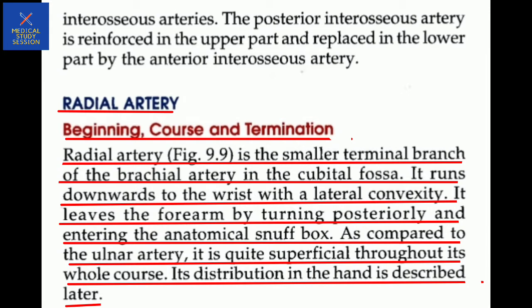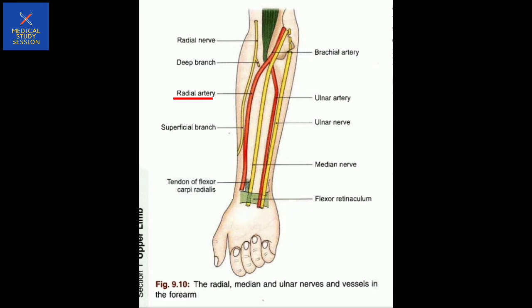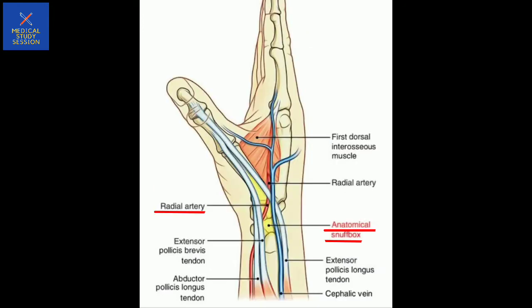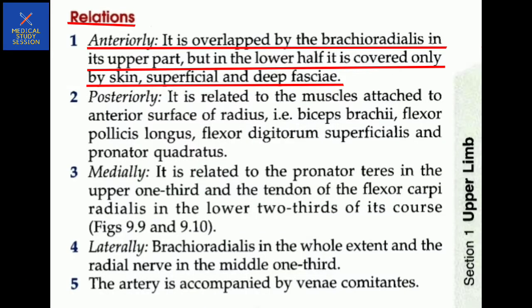Radial artery - beginning, course and termination. The radial artery is a small terminal branch of the brachial artery in the cubital fossa. It runs downward to the wrist with lateral convexity. It leaves the forearm by turning posterior and entering the anatomical snuff box. As compared to the other arteries, it is quite superficial throughout its course. Its distribution in the hand is described later. The radial artery is on the lateral side and moves backward to enter the anatomical snuff box.